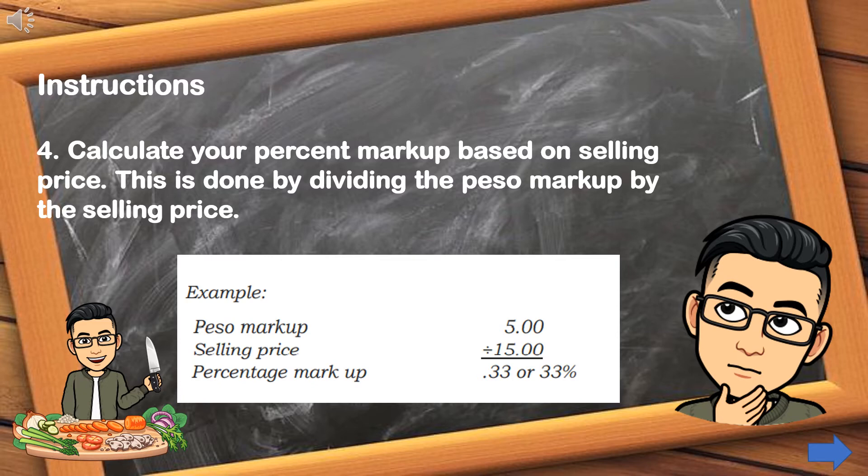Step number 4: Calculate your percent markup based on selling price. This is done by dividing the peso markup by the selling price. For example: ₱5.00 ÷ ₱15.00 = 0.33, so the percentage markup is 33%.